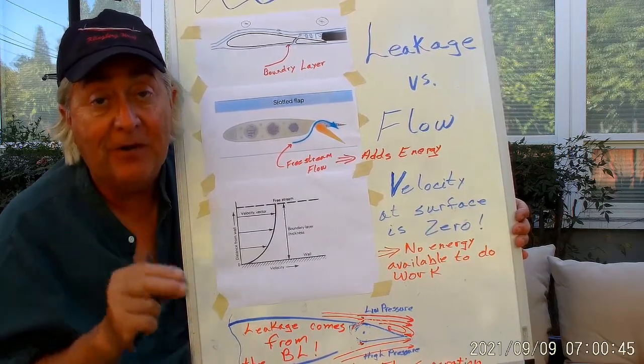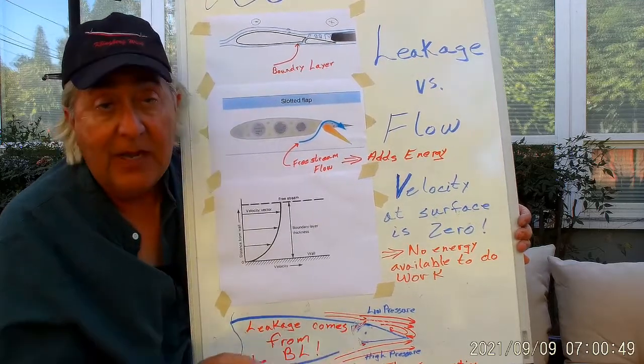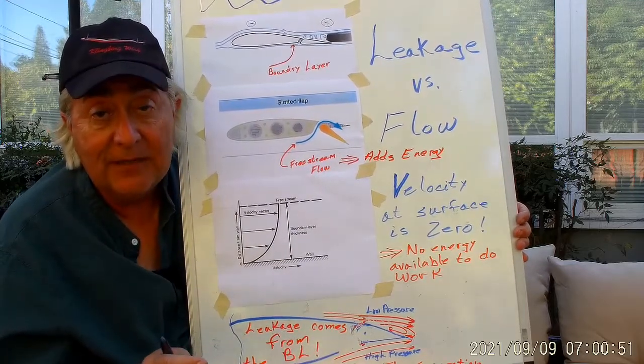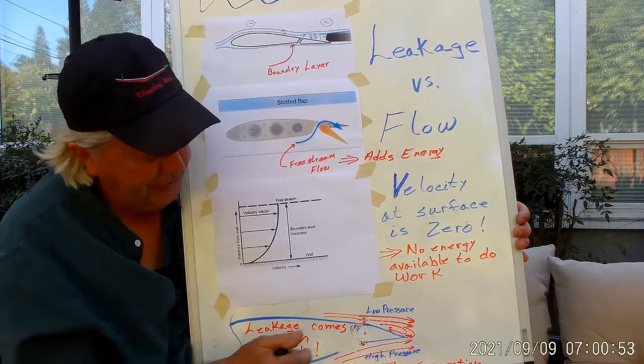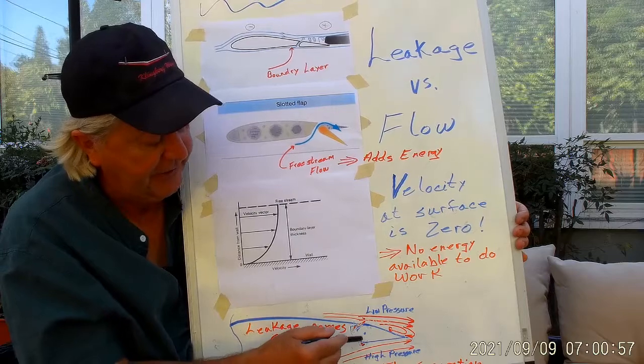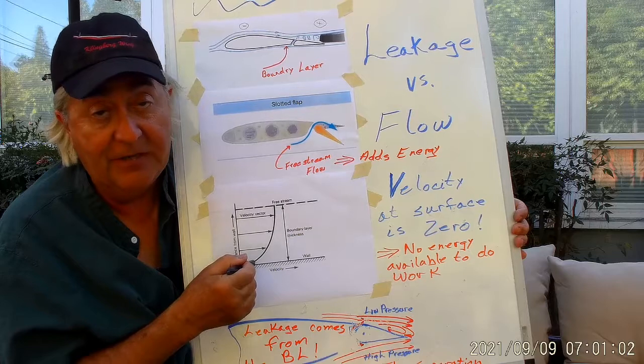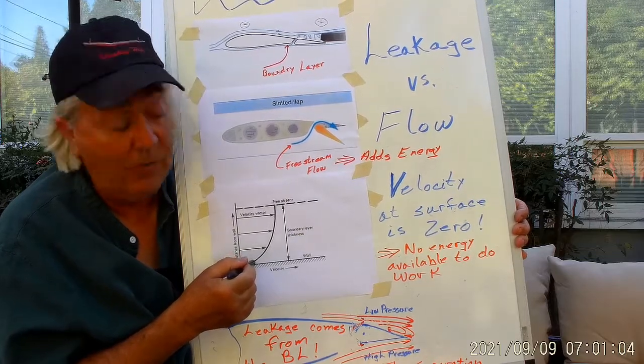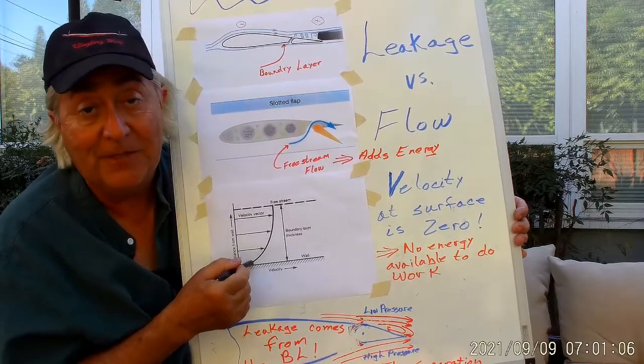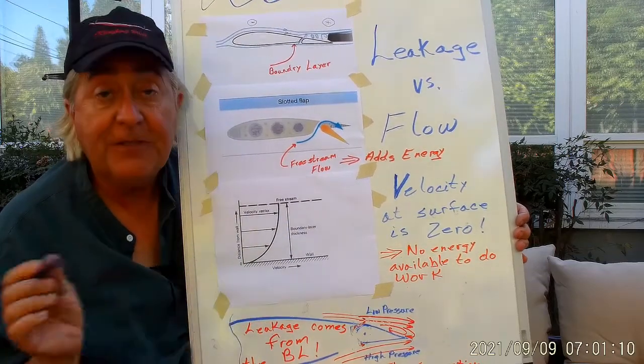First, you're sucking the boundary layer up off the surface through the gap and out the top. And why doesn't it suck the free stream through? Well, as soon as you suck that boundary layer through, a new one forms. And it's just a continuously forming boundary layer. So the only thing that's ever going up there is the air that has no energy in it because it already was spent rubbing up against the surface of the airflow, creating drag.